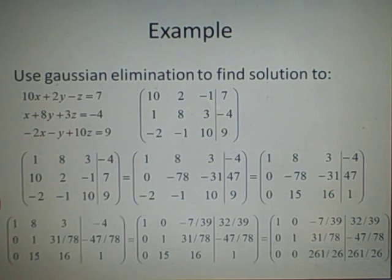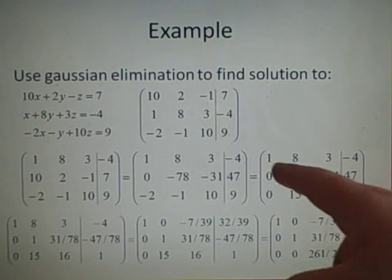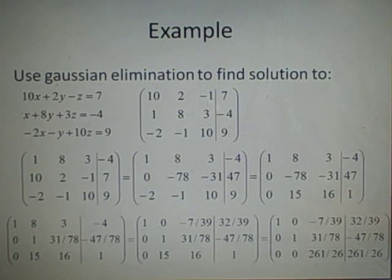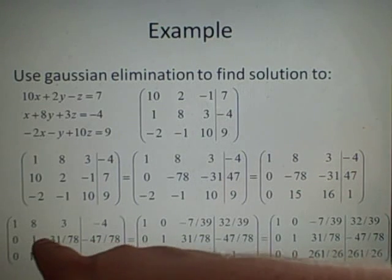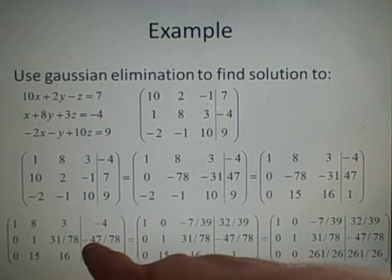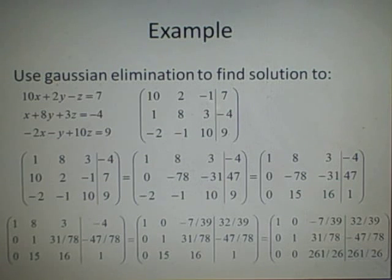Next column. Remember, we need to get the identity, so we want to make this equal to a 1 here. So what we can do is divide by minus 78 on everything on that row. We can multiply and divide by anything we like. So if we divide by minus 78, we'll get 1, 31 over 78, and minus 47 over 78. It's a bit messy, but it will work out. You'll need a calculator.